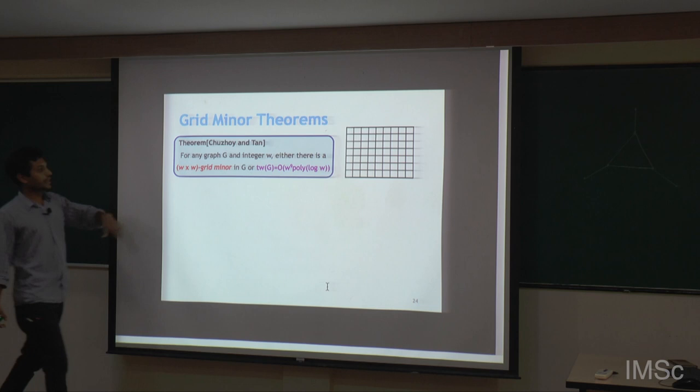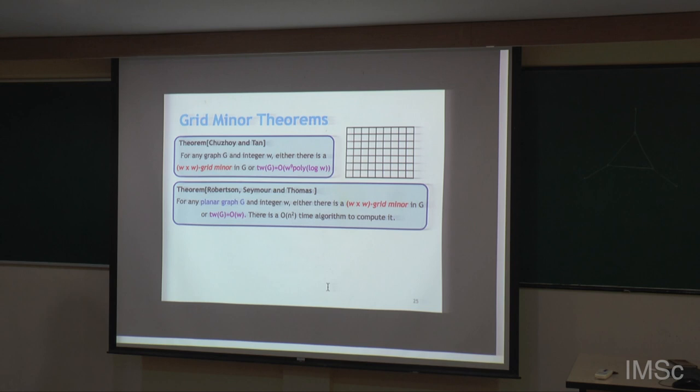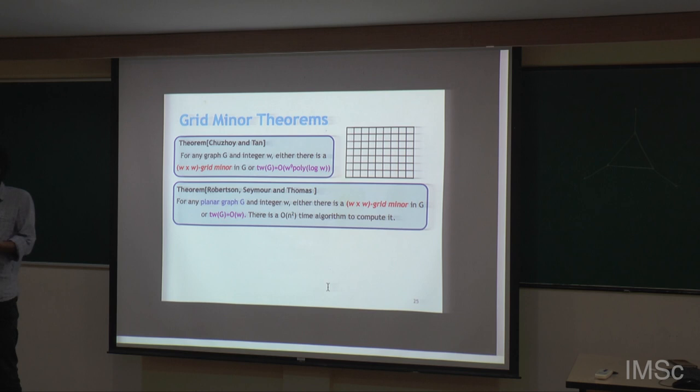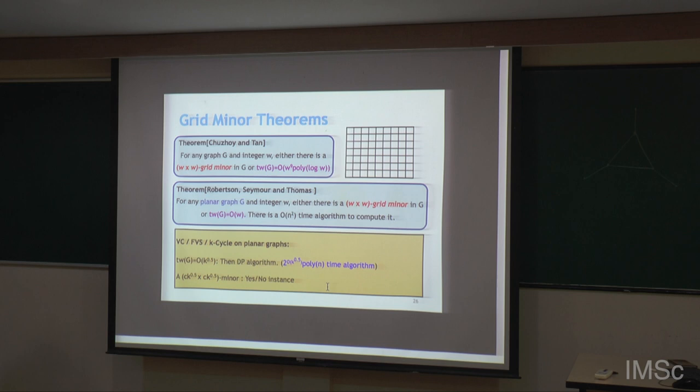The exponent has been decreased over time to 9, and there is also a polylog W version. For planar graphs, there is a linear grid minor theorem: given a planar graph and integer W, either it has a W×W grid minor or its tree width is at most O(W). And there is an O(n^2) time algorithm to compute it.